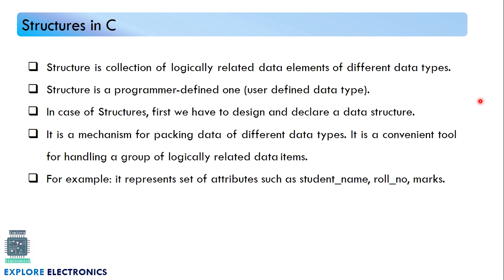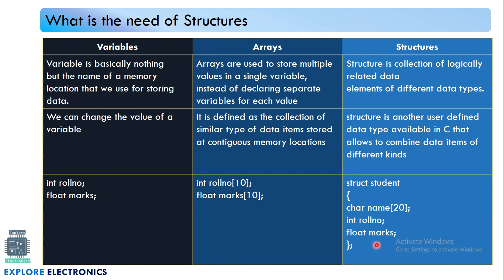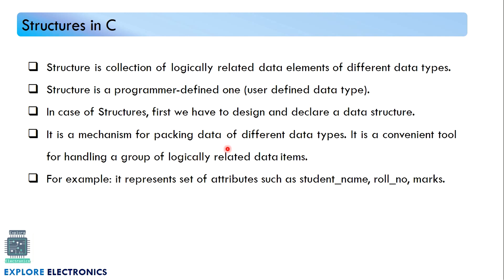A structure is a collection of logically related data of different data types and it is a user-defined data type. The user defines the structure according to the program's needs. For example, we define a student structure specifying that we need to store name, role number, and marks. We can also describe it as a mechanism for packing data of different data types together — grouping student name, role number, and marks and storing them as one unit.